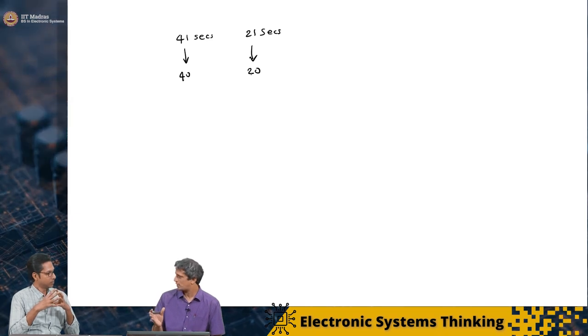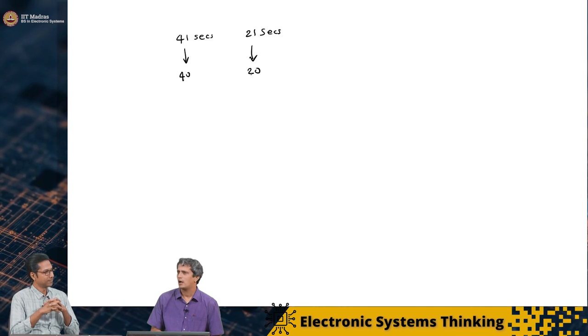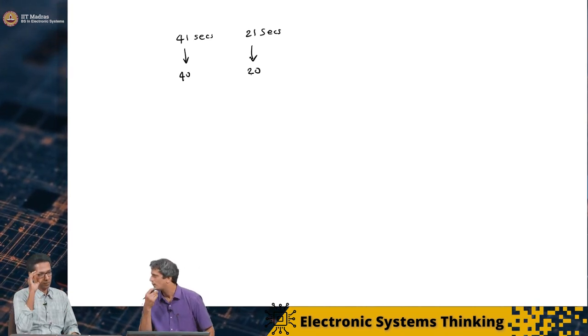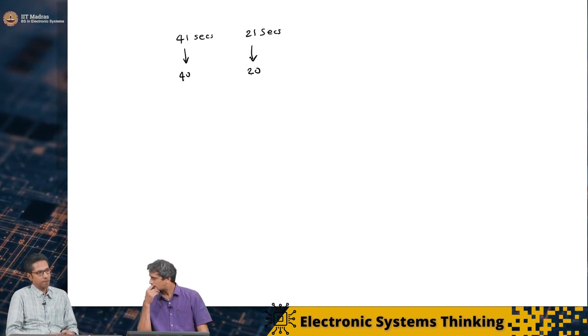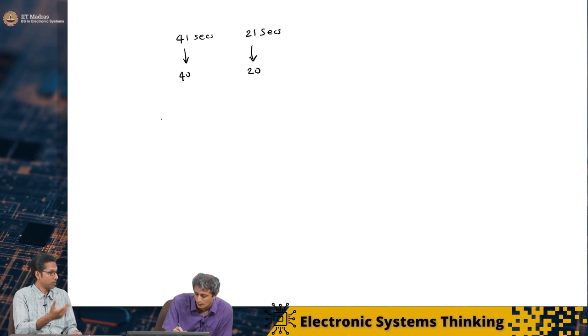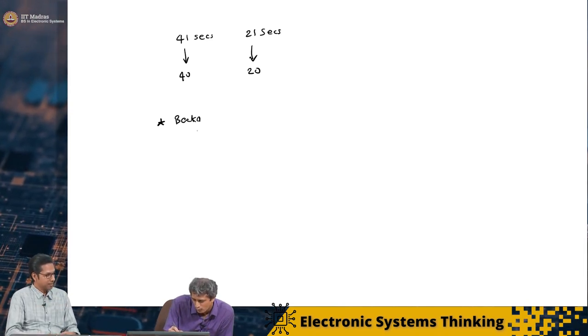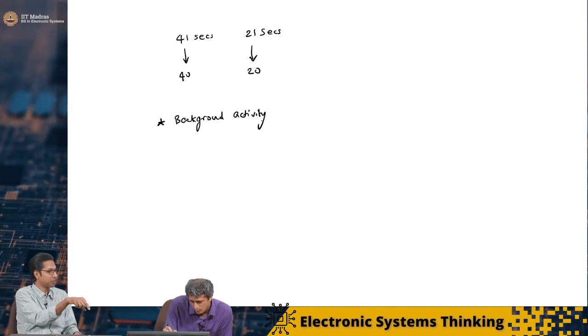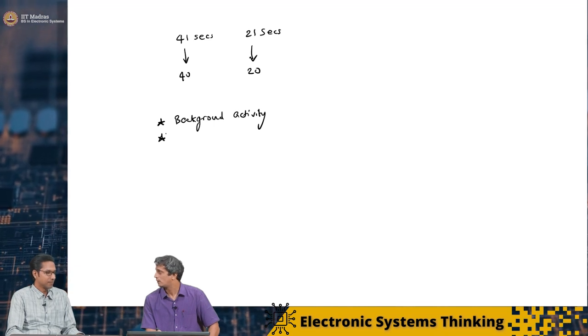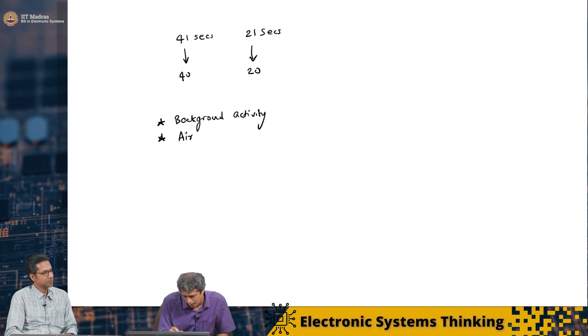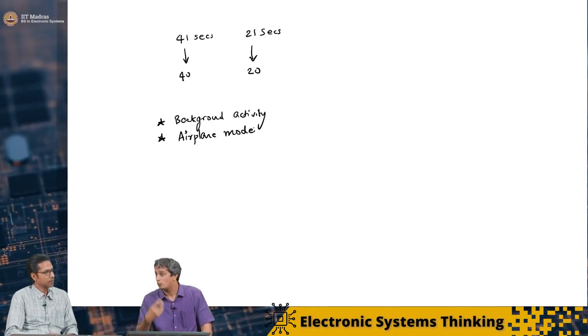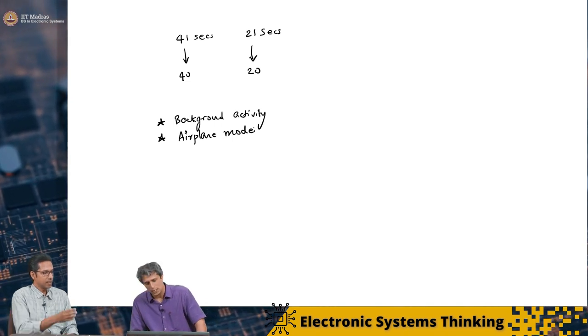But suppose I wanted to get this answer right to milliseconds of how much time does each charger take. What do you think we should do then? Then maybe we should look at, see while this was being charged, maybe the cell phone was doing something, some app would have been working. So probably we should turn off all the apps. Background activity. And maybe you have done these experiments at different locations, signal strength may not be the same. That is a good point. So what do you do for that? Put it in airplane mode. You got to put it in airplane mode so that the signal strength is not a problem. It is not trying to receive some weak signal and process that.